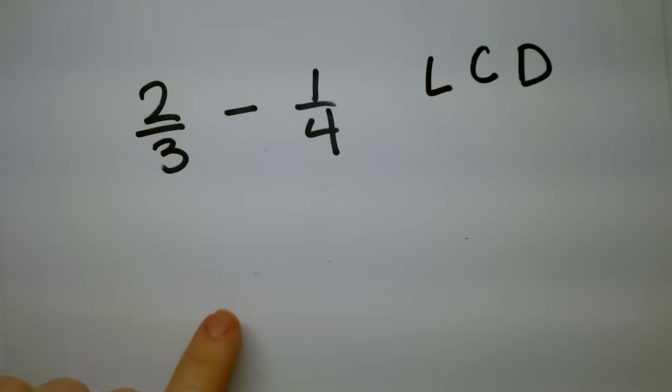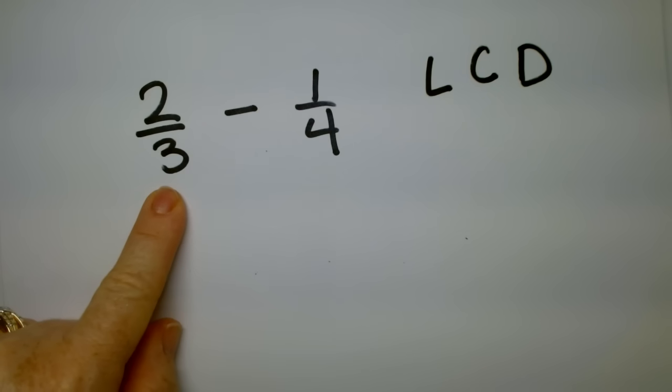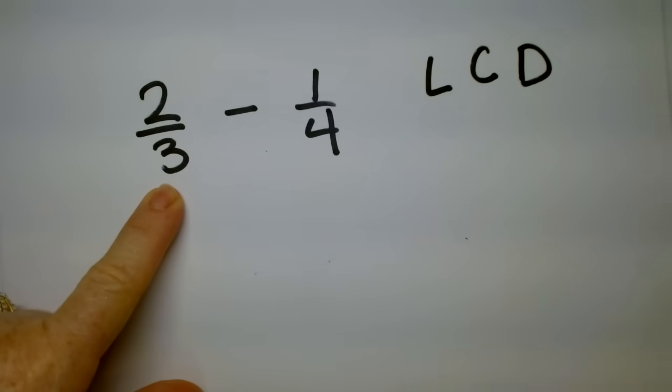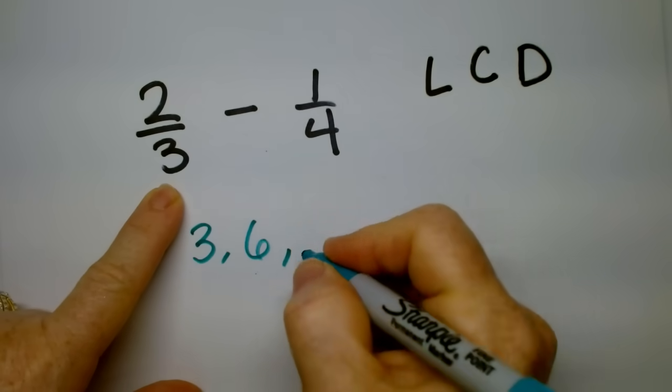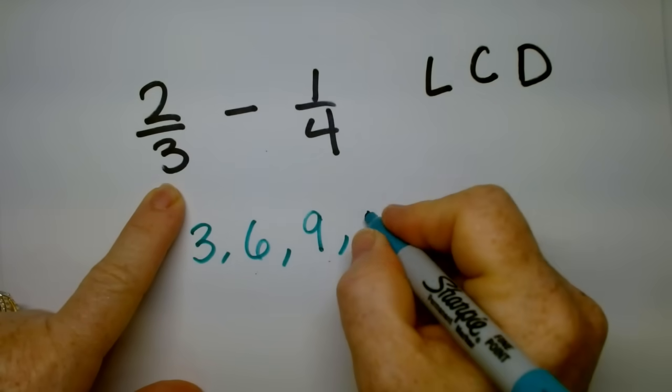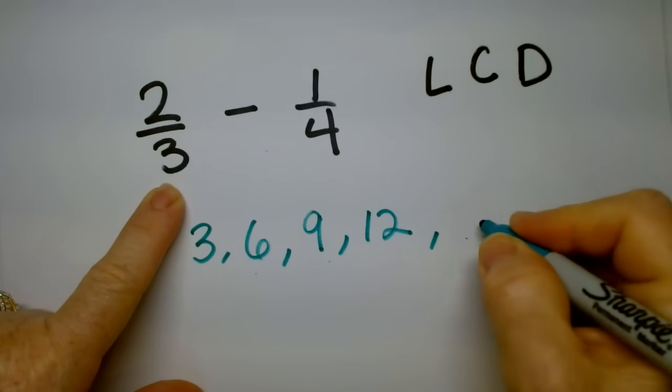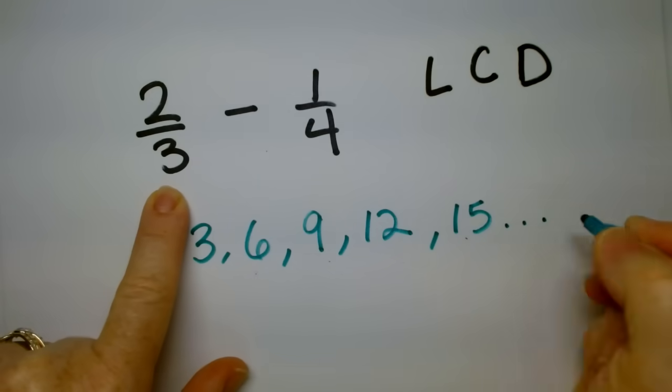And what that means is, do you see that three? Can you help me count by threes? I'll write it in another color. Three, then six, nine, twelve, fifteen, right, and it keeps going on.